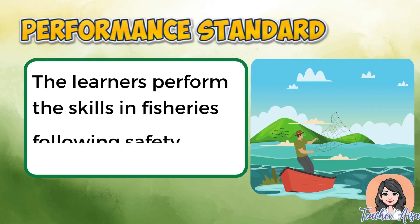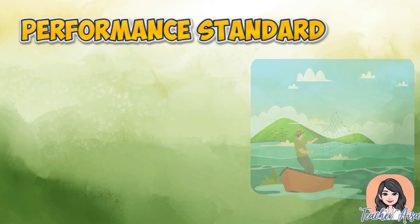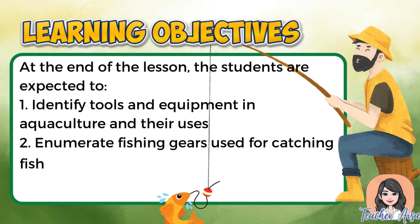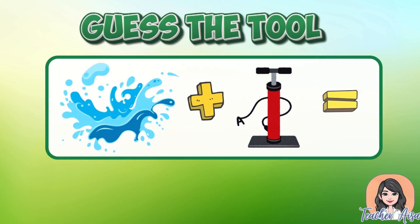For the performance standard, the learners perform the skills in fisheries following safety precautions. For the learning objectives, at the end of the lesson the students are expected to: one, identify tools and equipment in aquaculture and their uses; two, enumerate fishing gears used for catching fish; three, differentiate basic fishing bait methods.